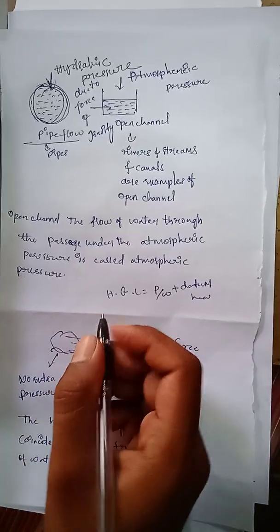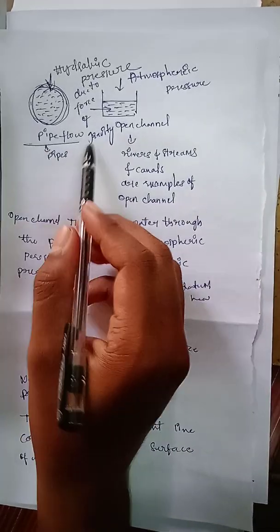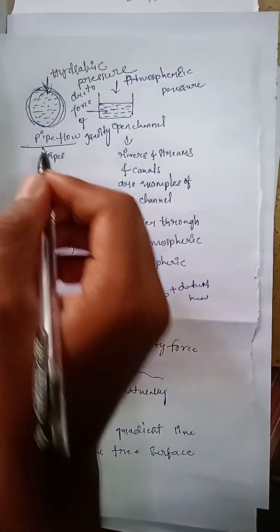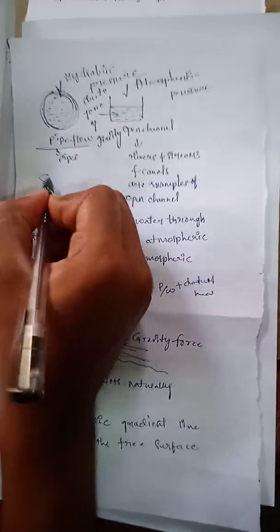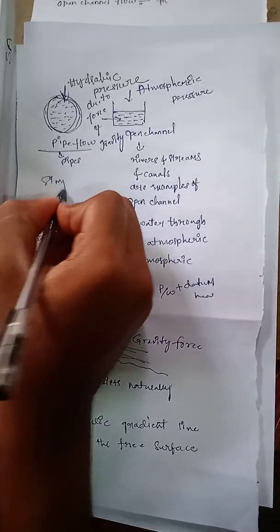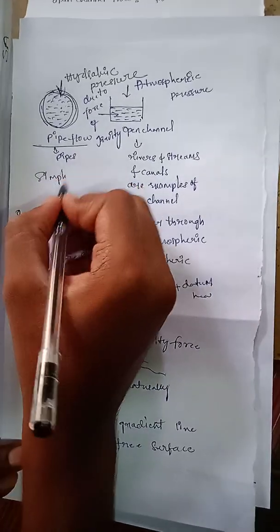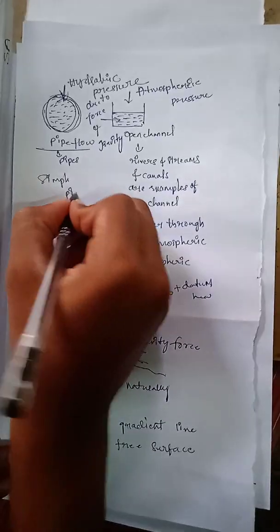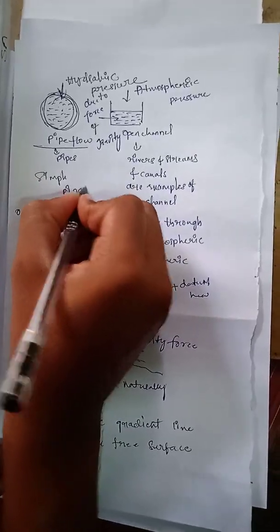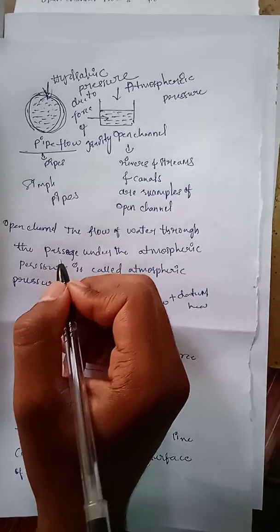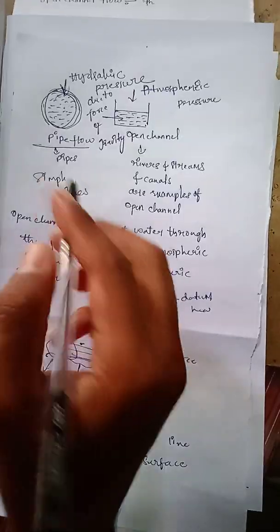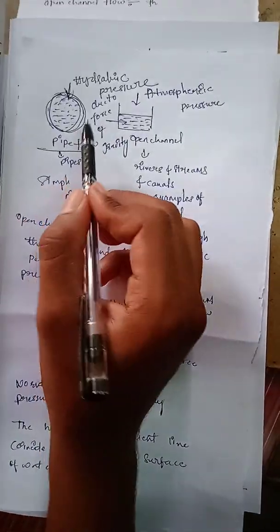Coming to examples of pipe flow, simply pipes themselves are the best examples for pipe flow.